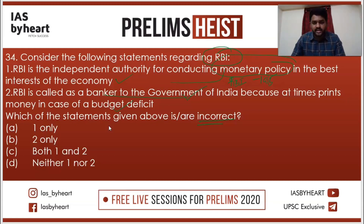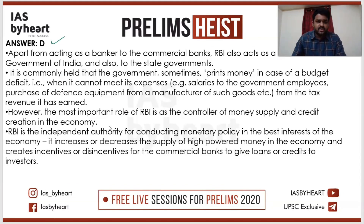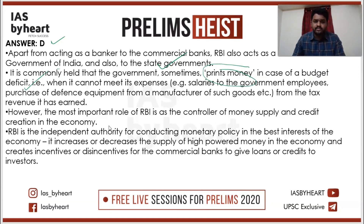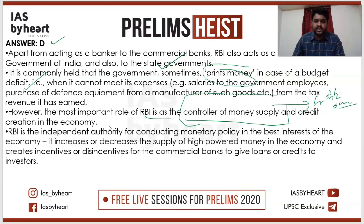They are asking which statement is incorrect. Since both statements are correct, the answer is D — neither one nor two. Apart from being a banker to commercial banks, RBI also acts as banker to the Government of India and state governments. RBI can print money in case of deficit situations. The most important role of RBI is being the controller of money supply, also called credit control — this is the main important function of RBI.